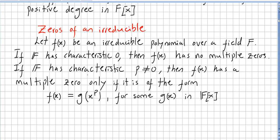If F has characteristic p, a non-zero characteristic, then f(x) has a multiple zero only if it is of the form f(x) = g(x^p) for some g(x) in the ring of polynomials. All this is pretty intuitive, and it's more or less like in calculus.